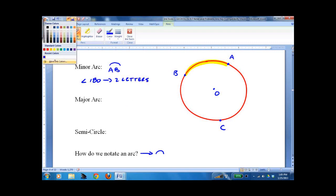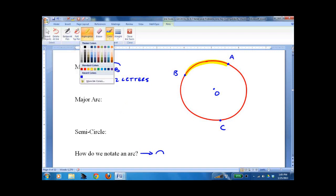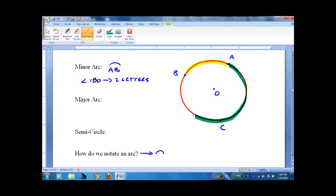Now, major arc would be something like this. A, C, B, it would be greater than 180 degrees. It takes three letters.